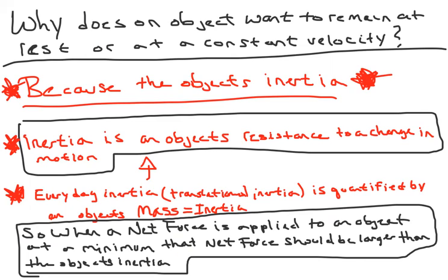Inertia is an object's resistance to a change in motion — it's a value you have to overcome. If I'm going to make something speed up, slow down, or change direction, I'm going to have to apply enough force to overcome that. The net force applied to the object has to be larger than the object's inertia.